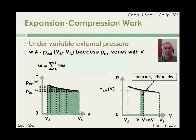So we can write w equals sum of dw equals minus the sum of p external times dv between v sub a and v sub b.